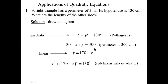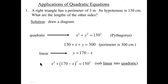We can take this y and plug it right into our Pythagorean equation. What we'll do is substitute the linear equation — y equals 170 minus x — into the quadratic equation, the one with the squares. So when we plug in 170 minus x for y, it looks like this. Notice we substitute the linear into the quadratic, not the other way around.